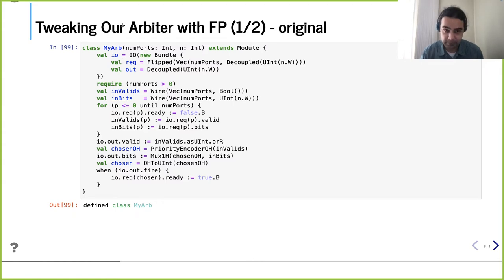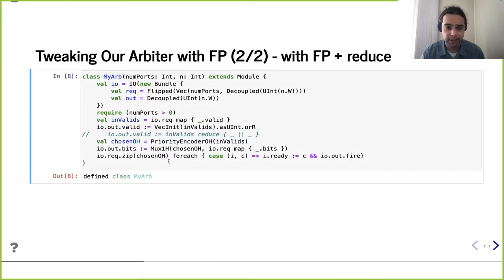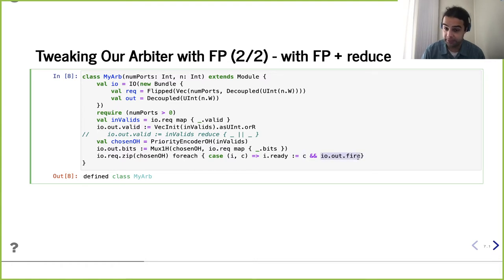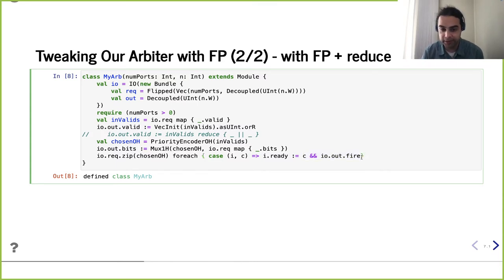In the new version, it's a much more parallel way of thinking. We took the request lines and the chosen one-hot and zipped them together. For each pair — the input and that chosen one-hot bit — we set input.ready to whether it's chosen AND whether our output is firing. We put them all together and have a nice compact expression. It's not super obvious what's going on at first glance, but I'd argue it's still pretty reasonable and hopefully clear. This might be a little unfamiliar on day one, but if you keep playing with these functional patterns it makes more sense.